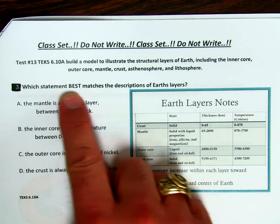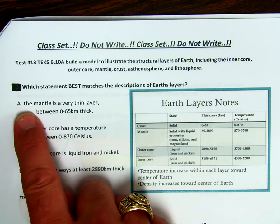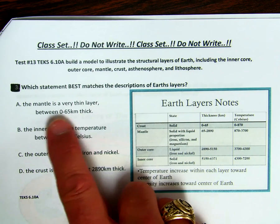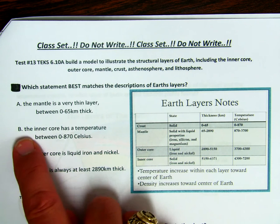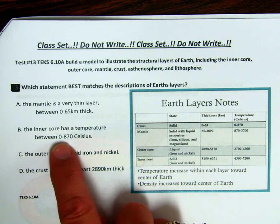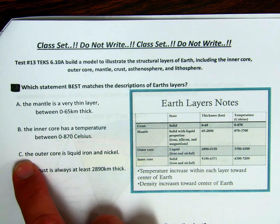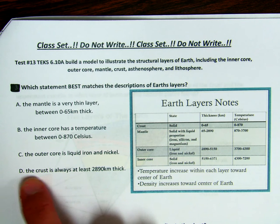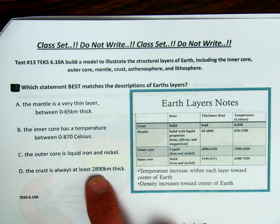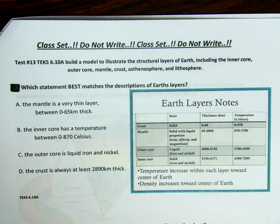Which statement best matches the descriptions of Earth's layers? Is it A, the mantle is a very thin layer between 0 and 65 kilometers thick? B, the inner core has a temperature between 0 and 800 degrees Celsius? C, the outer core is liquid iron and nickel? Or D, the crust is always at least 2,890 kilometers thick? So make sure you use your chart.